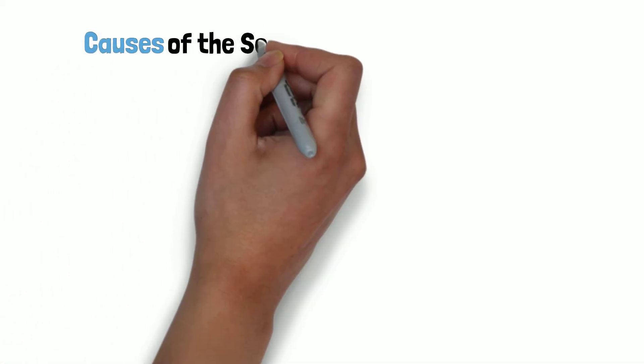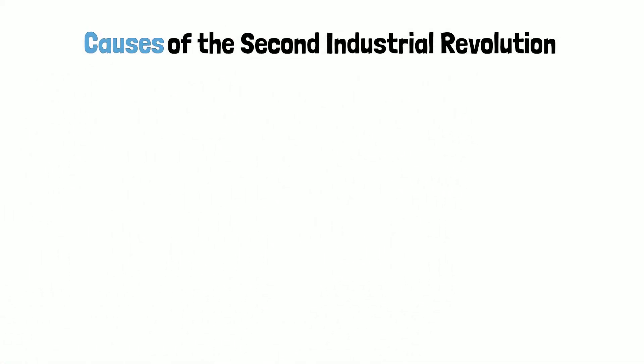Hello everyone, today we're discussing the causes of the Second Industrial Revolution. The First Industrial Revolution unfolded during the late 1700s and early 1800s and was a major change in the way that goods and foods were produced. Machinery and factories replaced handmade products, and new forms of energy to run these machines, such as coal and steam, were used.